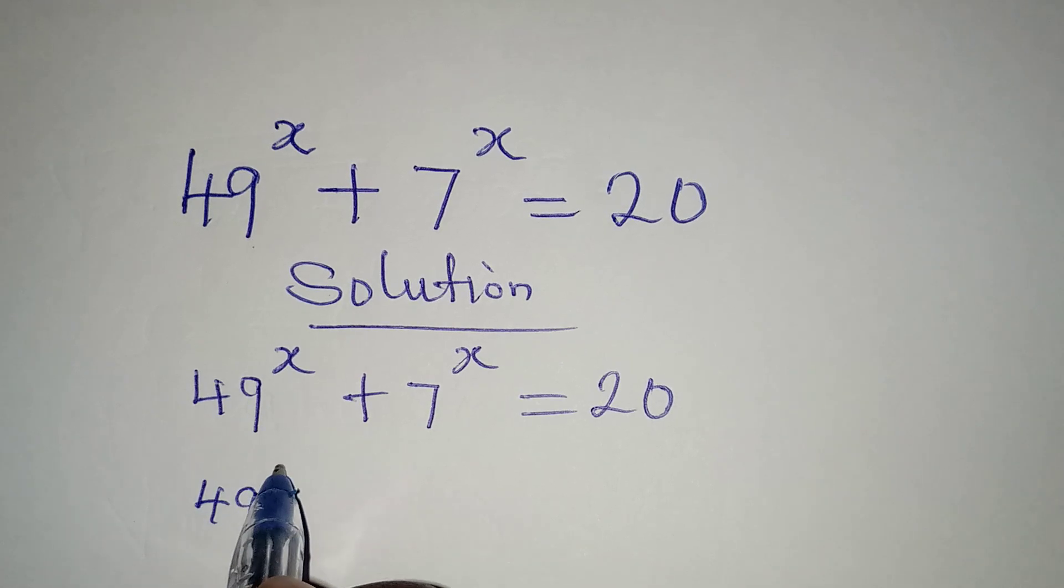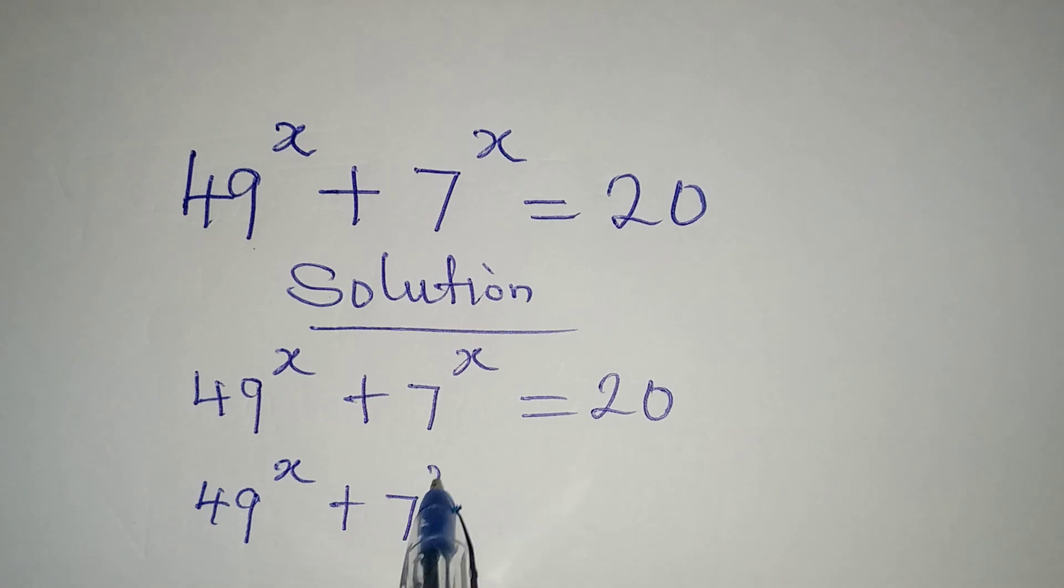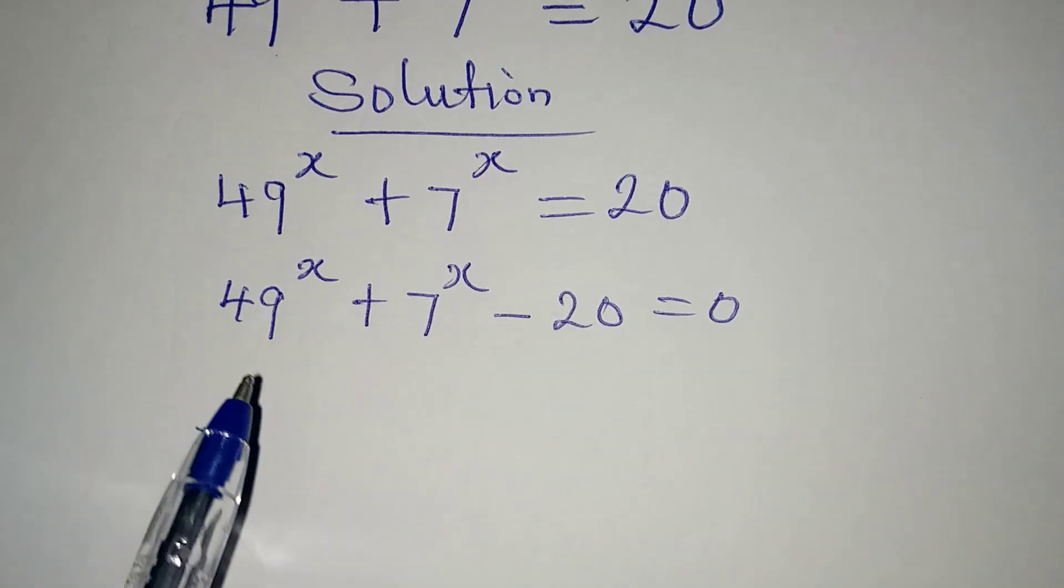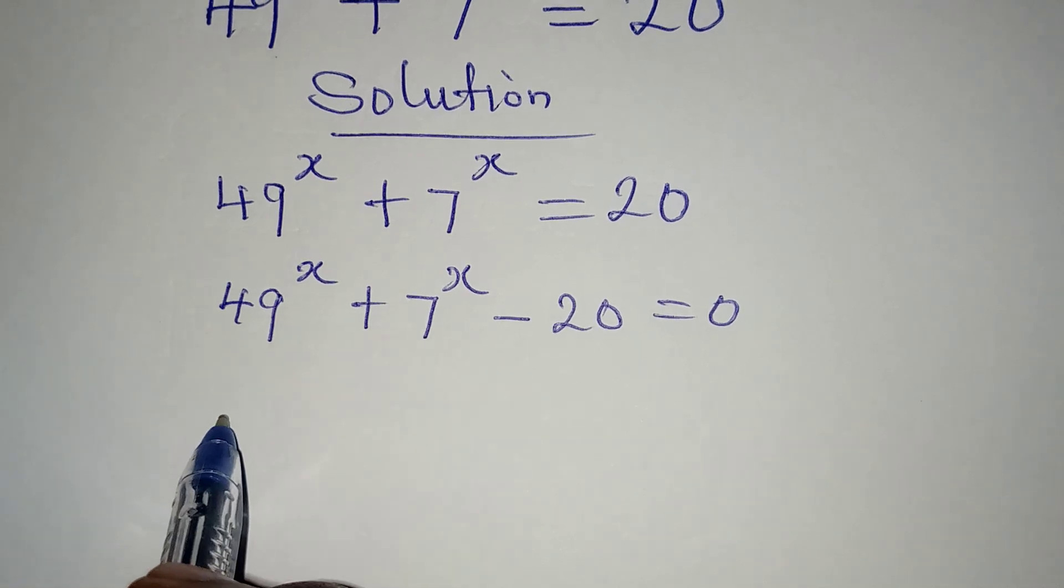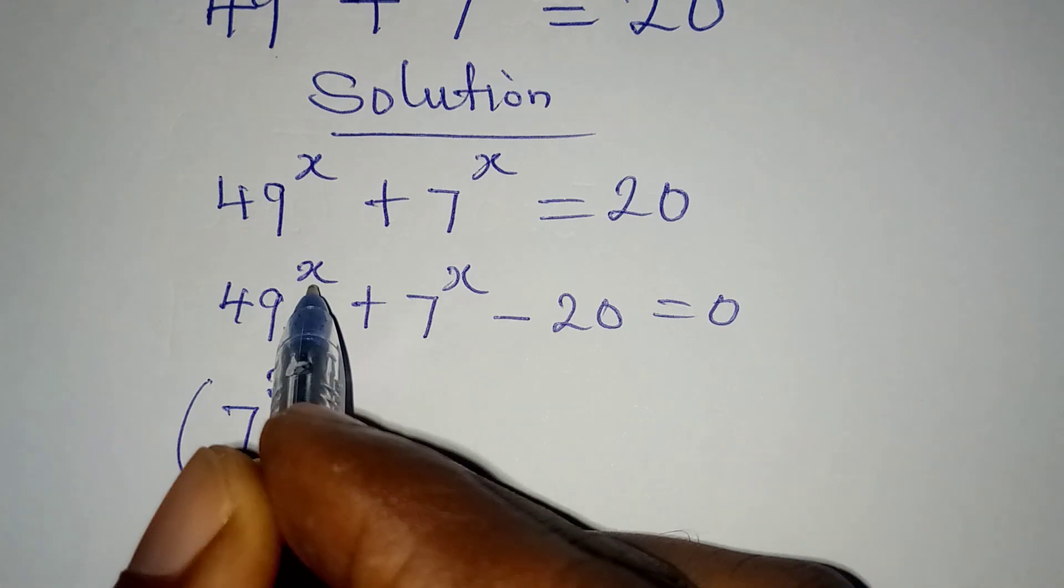So we have 49 to the power of x plus 7 to the power of x minus 20 to be equal to 0. And now 49 here is the same thing as 7 squared, and then we have x outside plus 7 to the power of x minus 20 equals 0.